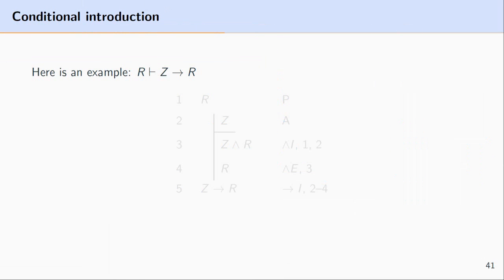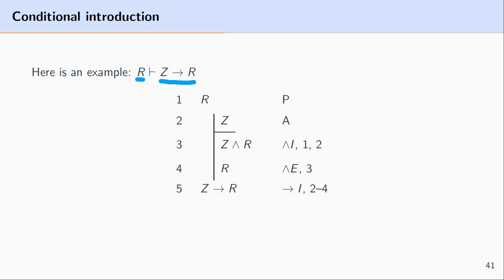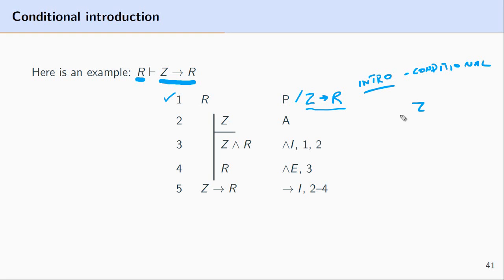Let's take a look at a particular example of conditional introduction. Here we have a proof where we want to reason from R to the conditional: if Z then R. At first glance it might be curious how we're going to derive Z or get Z into this proof if we don't have it in our premises. Well, one of the ways to do that is to make an assumption. We set up the proof at line one — we simply write R — and then the goal is to get the conditional if Z then R. Conditional introduction says that if you assume Z and derive R, then you can derive the conditional if Z then R, which is the formula that we want.